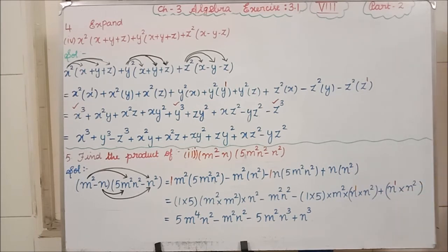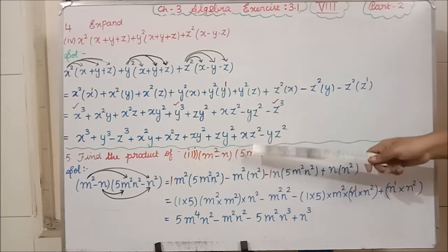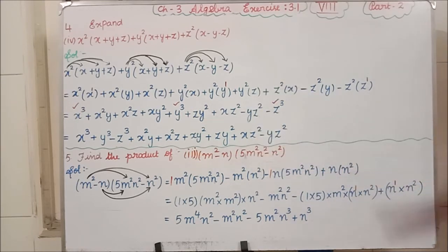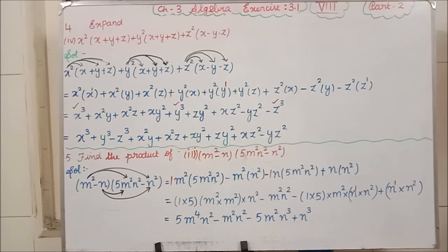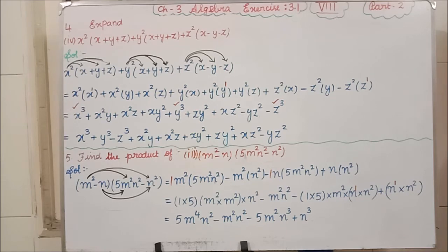Fifth question, third subdivision. The question is (M² − N)(5M²N² − N²). M² − N has two terms, so it is a binomial. 5M²N² − N² also has two terms, so it is a binomial. We are going to multiply binomial into binomial.